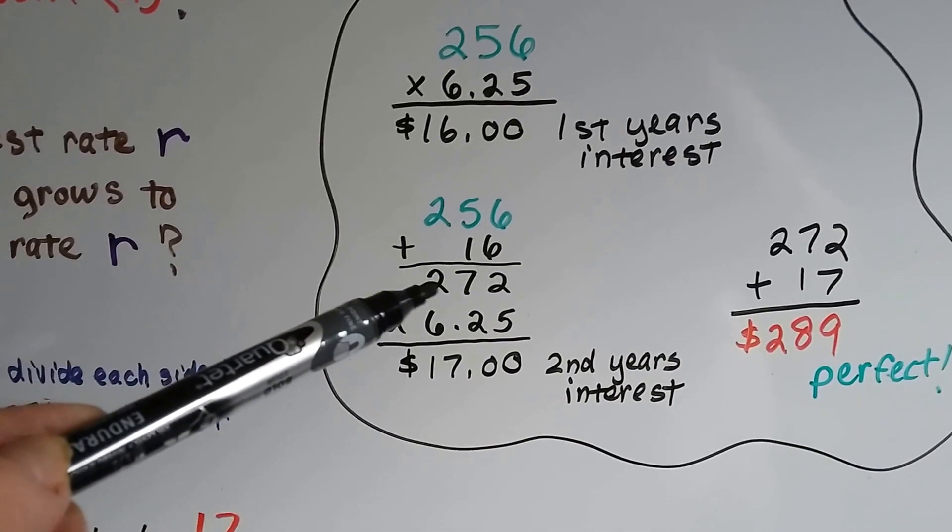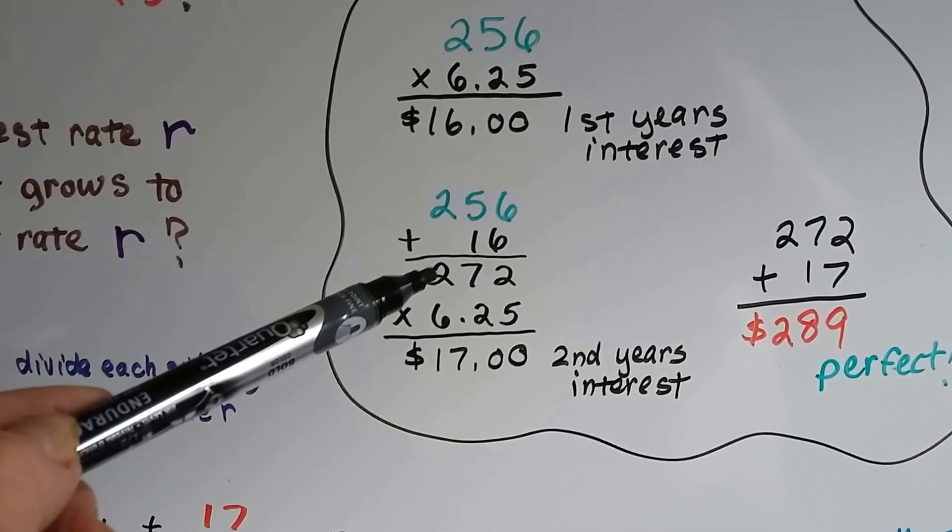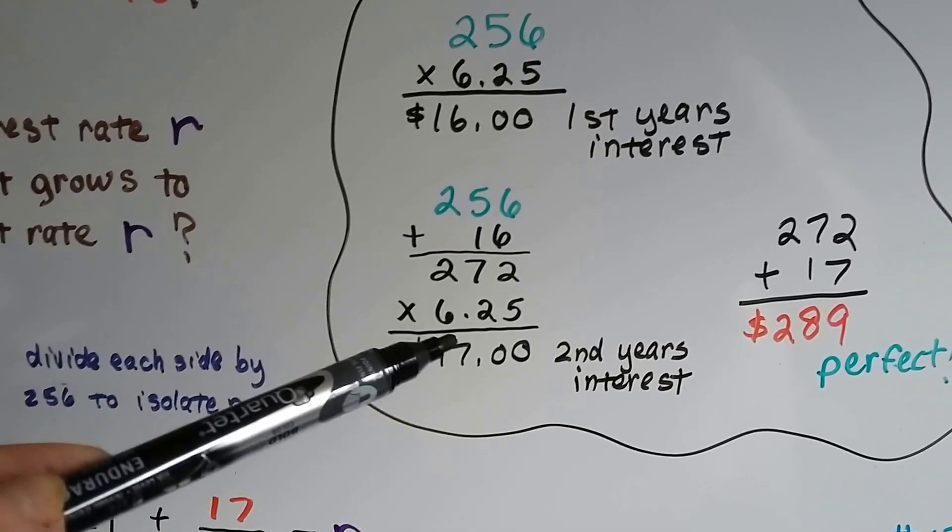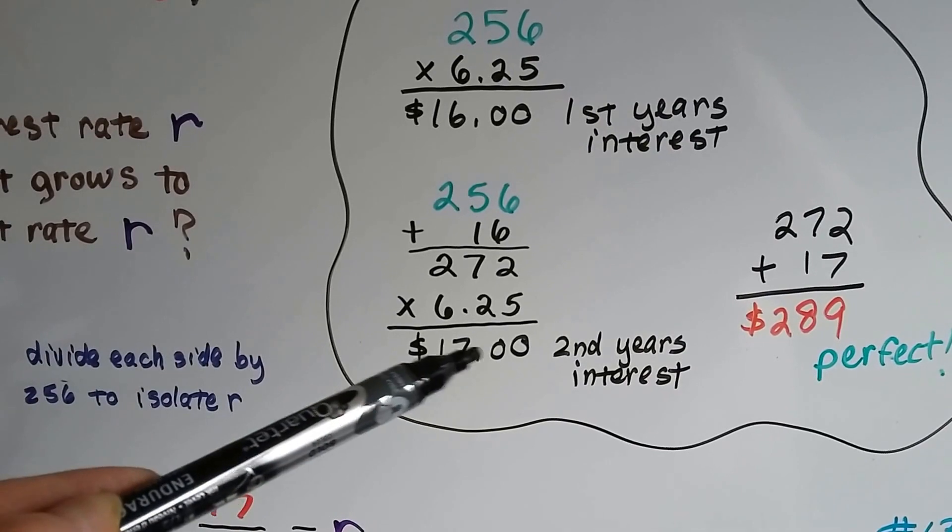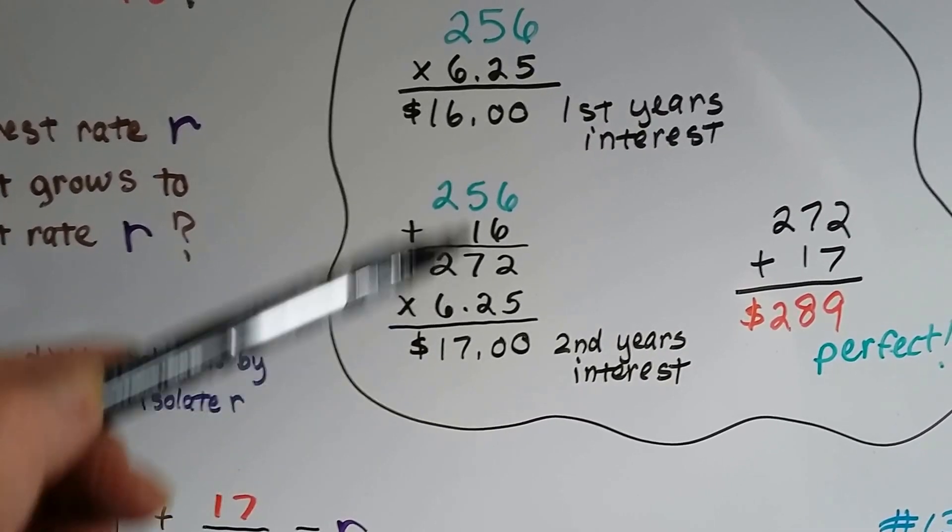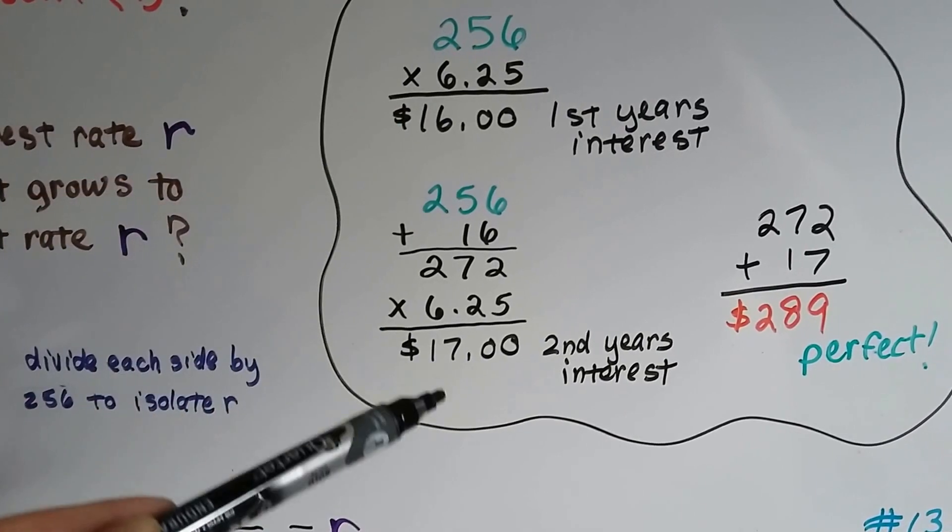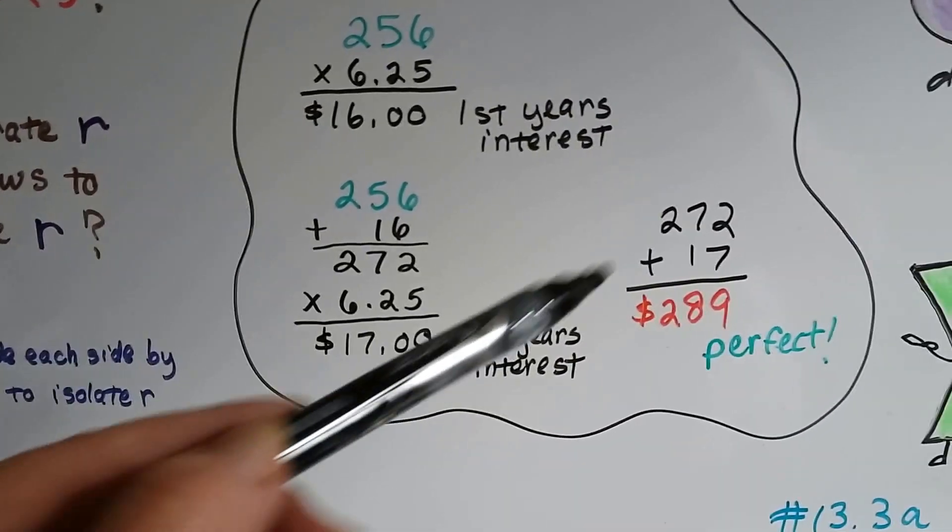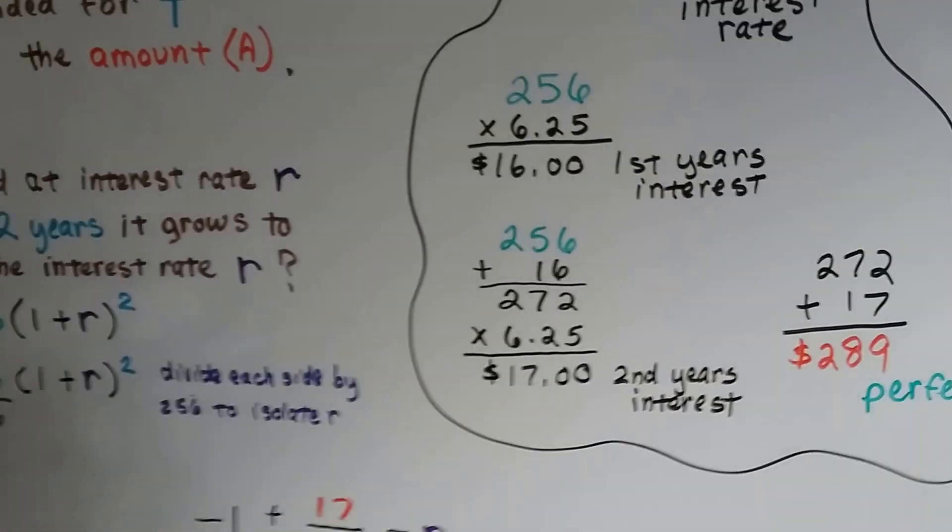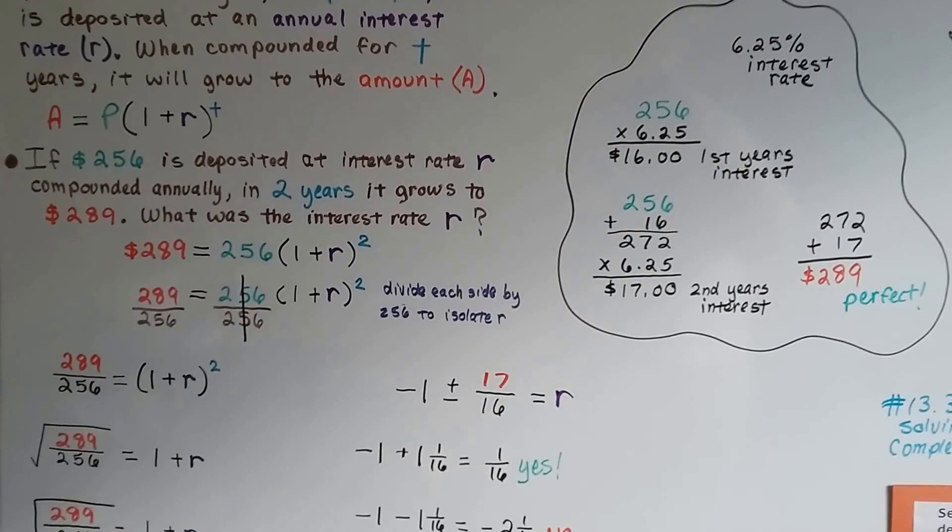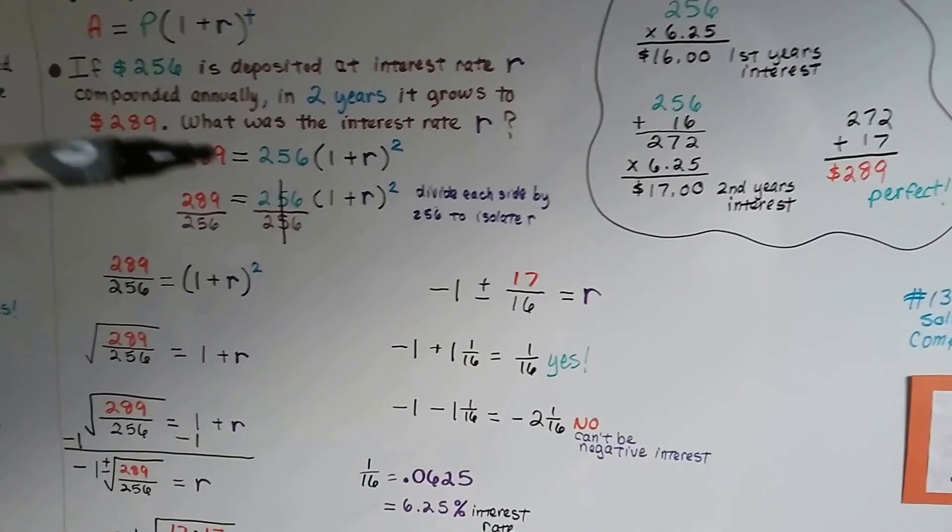If we add this $16 to that 256, we get 272. Now for the next year, this 272 is going to get interest of 6.25%. We multiply that, we get $17. So the second year's interest is more than the first year's interest, because we added that interest to that first amount. When we take the 272 and add that second year's interest to it, we get 289, and that's perfect. That's what that was.